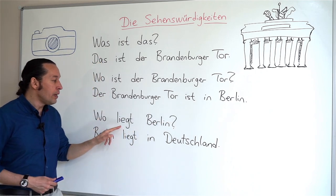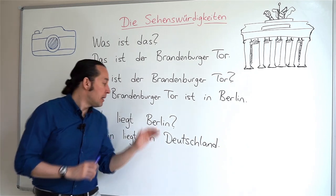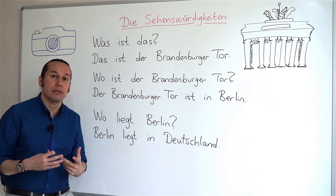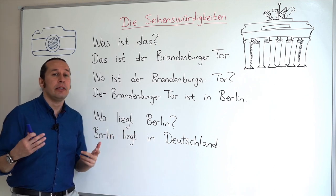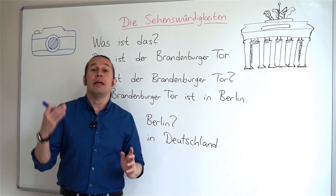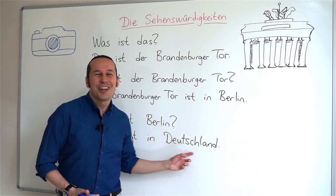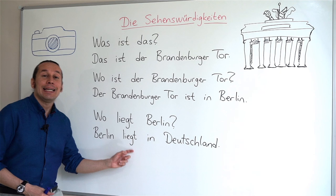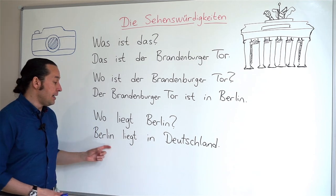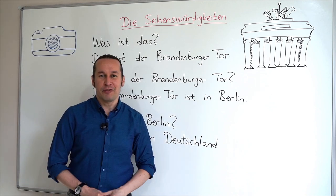The next question is 'wo liegt Berlin?' — where is Berlin located? 'Liegen' means to lie, but here it indicates location. Wo liegt Berlin? Berlin liegt in Deutschland — Berlin is located in Germany. Deutschland stands for Germany. I want you to repeat after me, please.